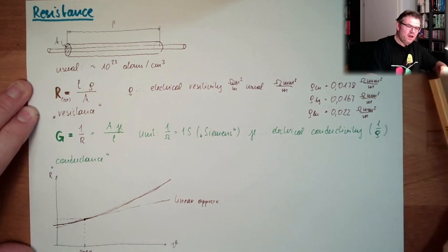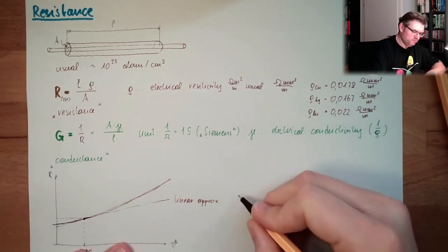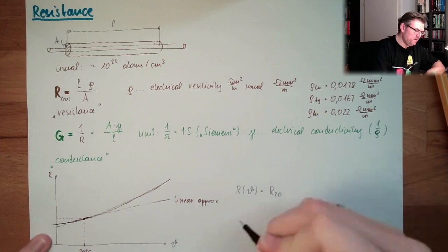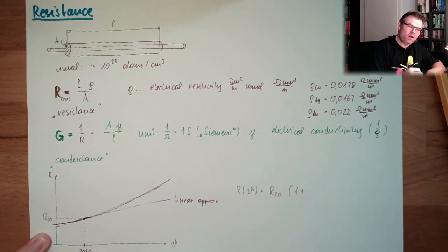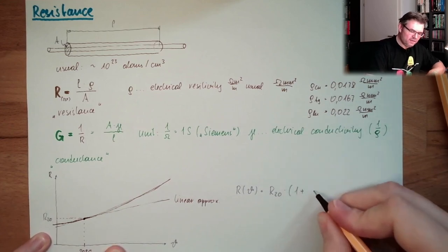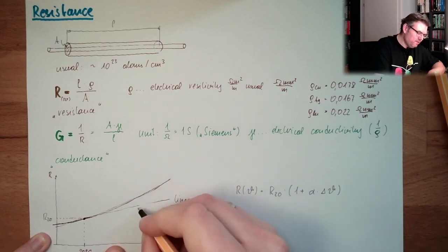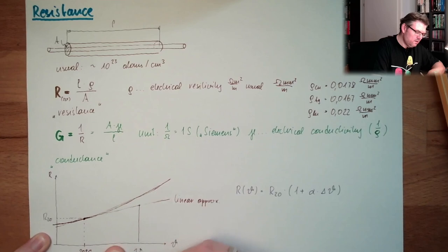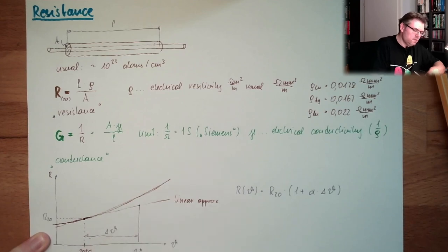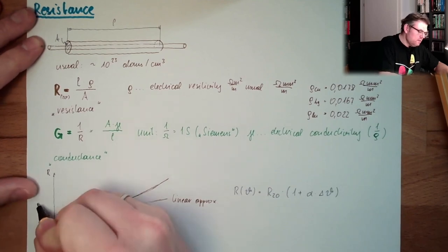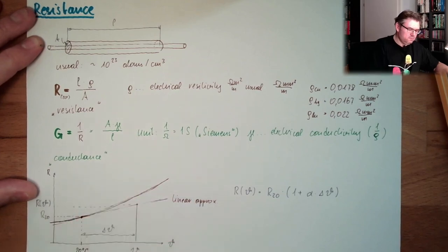And we say, our resistance at the temperature theta is the resistance at temperature 20 degrees. Is the resistance at the temperature theta. And we have a thermal coefficient, alpha. Multiplied by the difference. So if we have here a temperature theta, then this is the difference. And here we're ending up at the resistance r from theta. This is how this looks like.